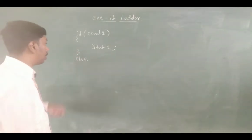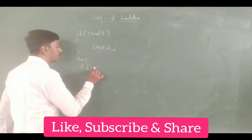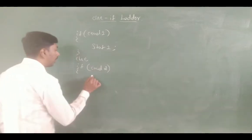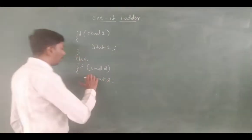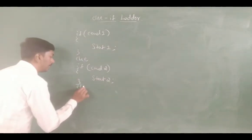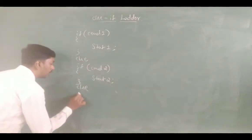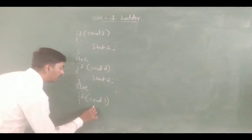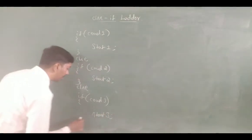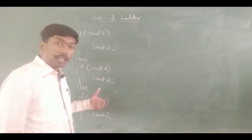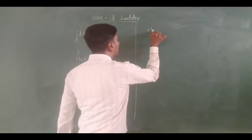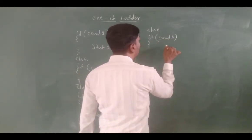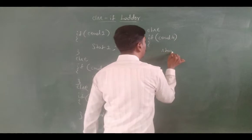Again we have to check the condition. If there is condition 2 and condition 2 is true, then statement 2 will take the execution. By chance that condition is false, then again go for another one. If condition 3 is true, then statement 3 will take the execution. Again we go for the else — if condition 4 is true, then statement 4 will take the execution.